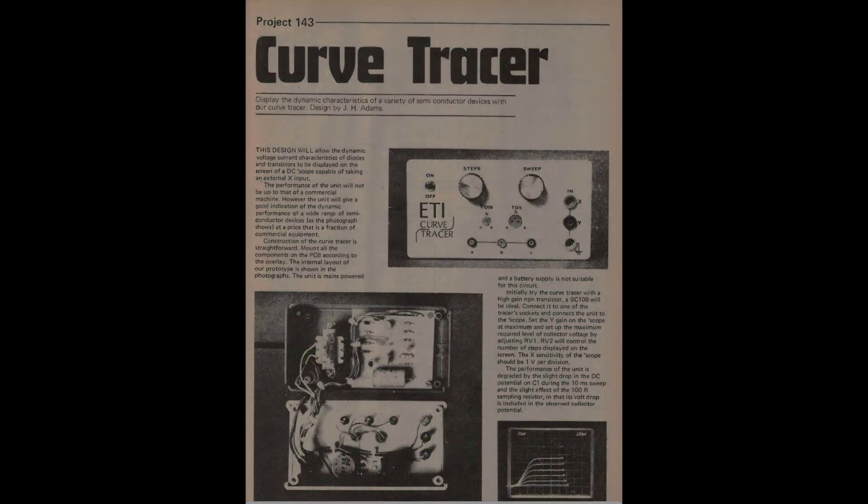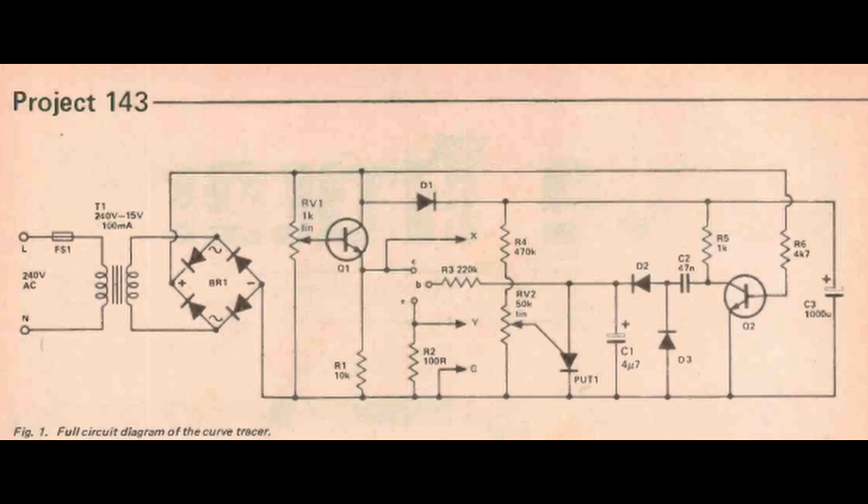Now we're looking at the schematic. It looks simple and the board is pretty simple. It uses a programmable unijunction transistor. Now I've never even heard of one of those quite frankly. So we're going to build it and hopefully it works, and we'll put it on the scope to see exactly what's happening.